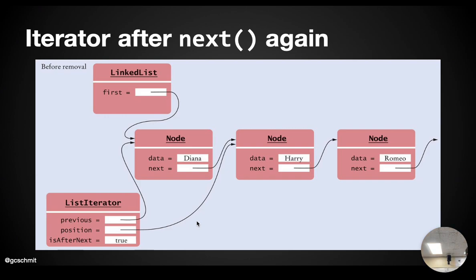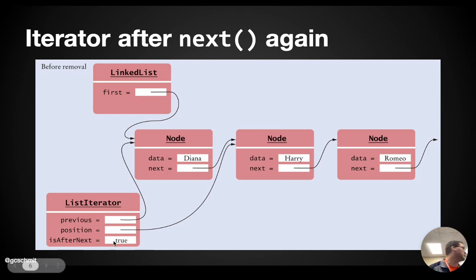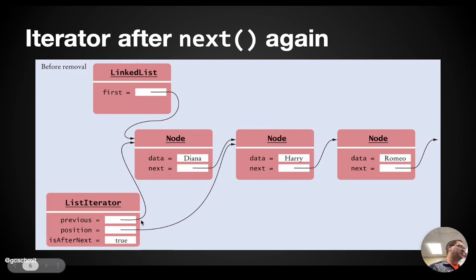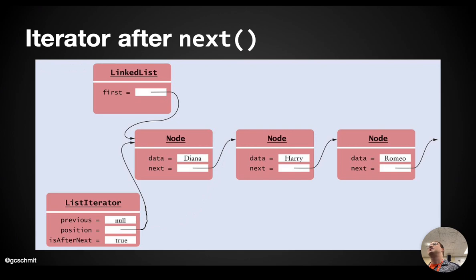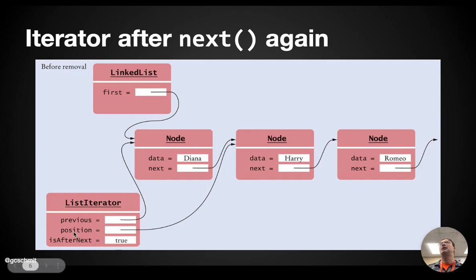What if we call next again? Position will now refer to the second node and we return Harry. isAfterNext will still be true, and previous now refers to the second-most-recent node — the first node. I always have to think through: I need to update previous, but where do I get the value? Position is initially referring to the first node, so before I change position to refer to the second node, I'd better set previous to refer to that first node. So we set previous to position before changing position, then in the else branch set position to position.next.